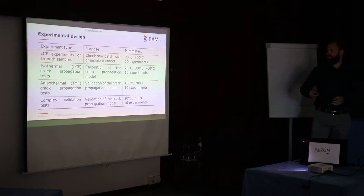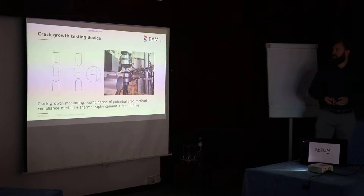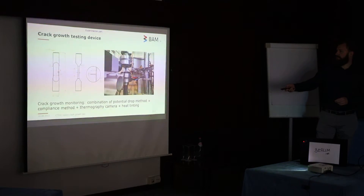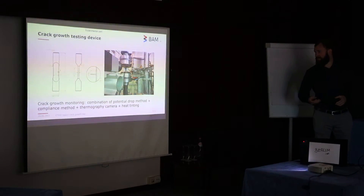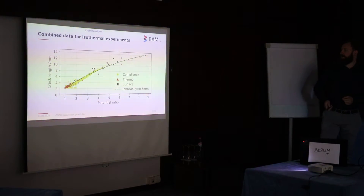Finally, we have complex validation tests with different specimen geometries to verify whether the crack propagation model remains valid. Our testing setup is shown on the right side. On the left we can see the specimen with a rectangular testing area and a U-shaped notch manufactured by EDM. We have an extensometer, potential drop wires, induction coil heating, and a thermography camera. For crack growth monitoring we combine four methods: compliance data, thermography data, heat tinting, and potential drop readings to calibrate our Johnson function.